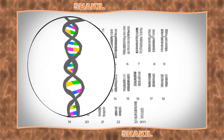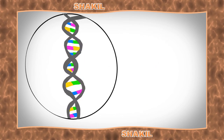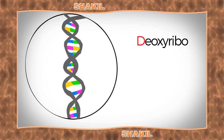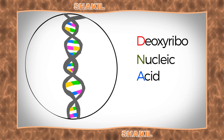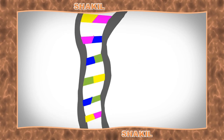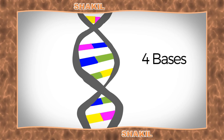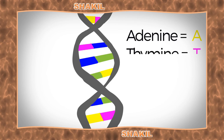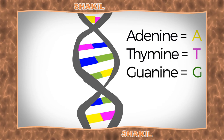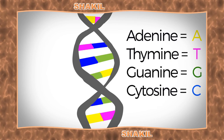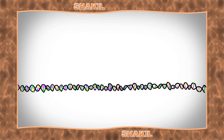The chromosomes are really long strings of DNA, deoxyribonucleic acid. DNA is shaped like a ladder that's been twisted. This shape is called a double helix. The steps of the ladder are made of four bases: adenine is A, thymine is T, guanine is G, and cytosine is C. A stretch of the DNA is called a gene.